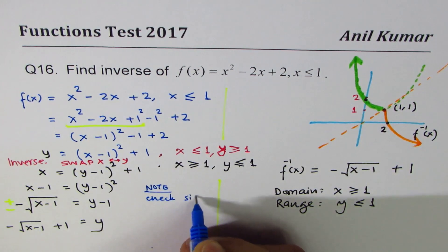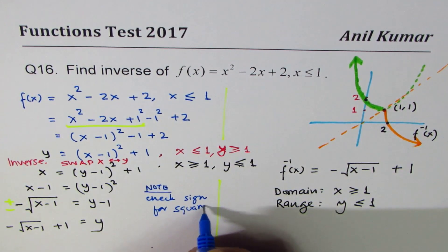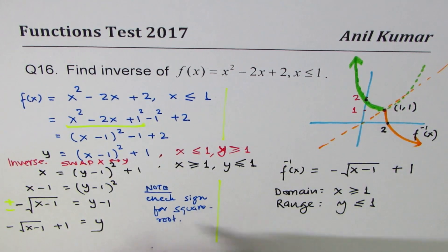It's very important in quadratic equations, whenever you are given a restriction, that is reflected at this stage when you do square root—which sign to take. Let me write a note here: check sign for square root.